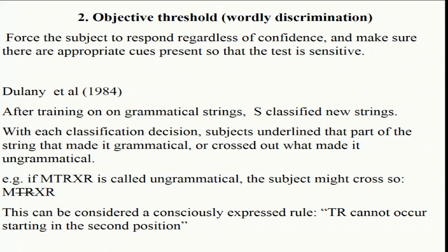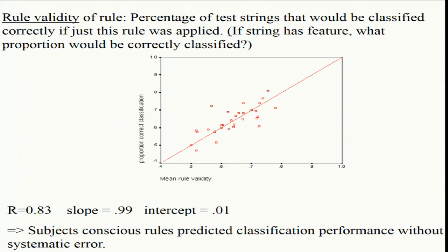So how do we go from the rules to seeing if these rules are good enough to account for the subject's performance? You take a rule like 'TR cannot occur starting in the second position,' and find all the strings with TR in the second position. Let's say there are two of them and they're both non-grammatical — that rule would have a validity of 100%, in the sense that every string with that feature is non-grammatical. If all the strings were grammatical, the rule would be 0% right. So every rule the subject gives you can be assigned a validity — rule validity.